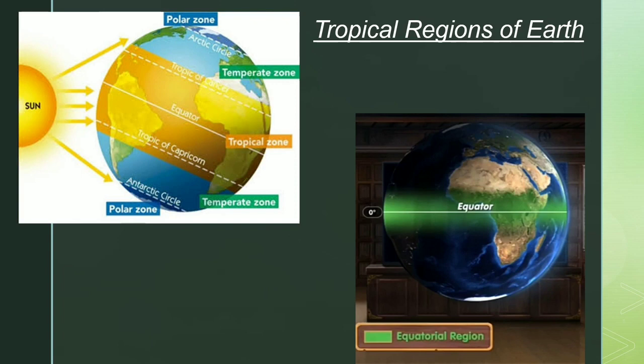If we go near the equator, the region which is 5 to 10 degrees near the equatorial region, the sun rays fall directly at the equator in a straight line and are slightly slanted at the poles. Hence, at the surface, equatorial regions experience a high amount of direct sunlight, which is why the temperature is very high at the equatorial regions.